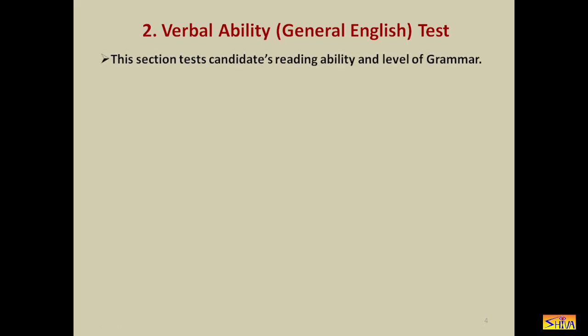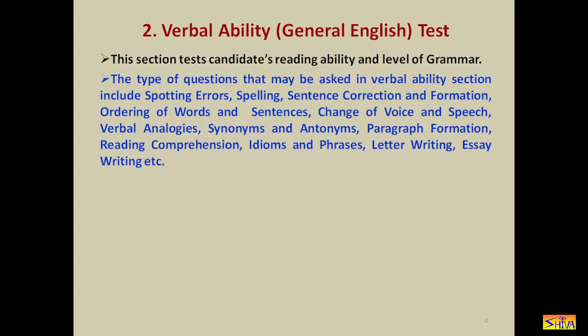The next section is verbal ability, that is the general English test. This section tests the candidate's reading ability and level of grammar. Some companies do not include this section in their aptitude test. The types of questions that may be asked include: spotting errors, spelling, sentence correction and formation, ordering of words and sentences, change of voice and speech, verbal analogies, synonyms and antonyms, paragraph formation, reading comprehension, idioms and phrases, letter writing, essay writing, and more.